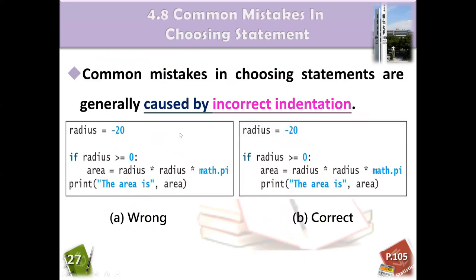So we will talk about the next part, 4.8, common mistakes in choosing statements. So sometimes we will have some mistakes. I will show you some mistakes. You can try it. Common mistakes in choosing statements are generally caused by incorrect indentation. What is indentation? Because you have something, you know, the design logic is wrong.